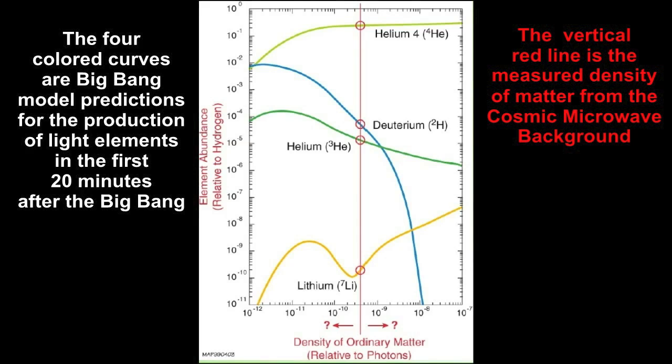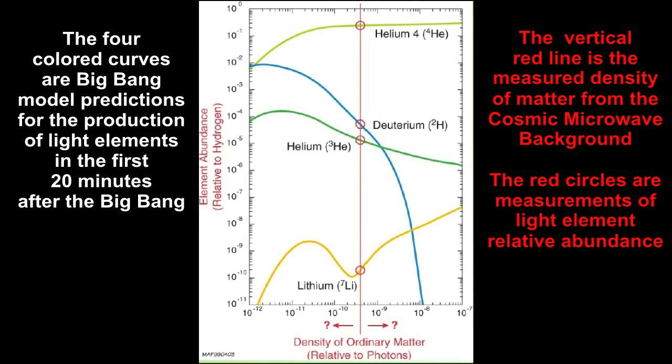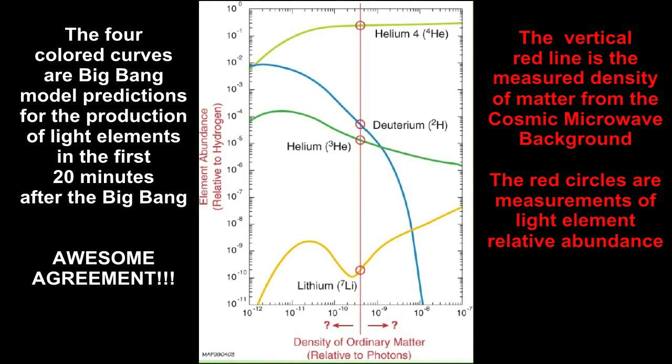The prediction from cosmic microwave background for the density of ordinary matter intersects the four lines in four points. These points represent what should be the element abundance for each one of these elements. The red circles of relative abundance coincide exactly to the position of intersection between the cosmic microwave background prediction and the theoretical prediction for the relative abundance of each element.